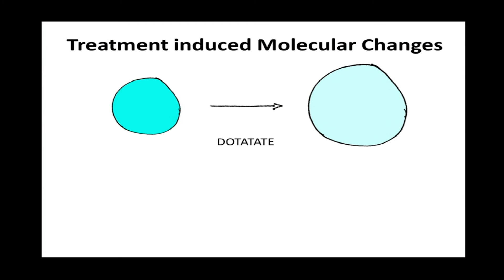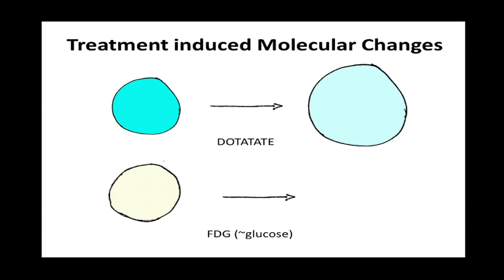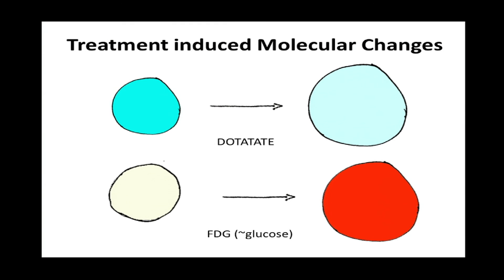Neuroendocrine tumors can change and de-differentiate, becoming more aggressive. At that point, they often lose their somatostatin receptors and are no longer well-imaged with dotatate. We have other tracers that become more useful, primarily FDG — a form of glucose labeled with a radioactive isotope of fluoride — which allows PET imaging. Most grade one and grade two neuroendocrine tumors have very little FDG uptake, which is why they're better imaged with dotatate. Once they de-differentiate or become more aggressive, they take up a lot more FDG, so follow-up scans should then be done with FDG rather than dotatate.